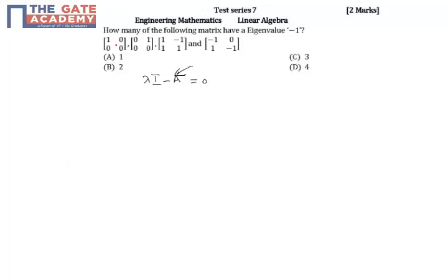For example, consider the first matrix. Lambda I means lambda 0, 0 lambda, minus A means the given matrix 1 0, 0 0. This equals 0. You have to equate its determinant value equal to 0.